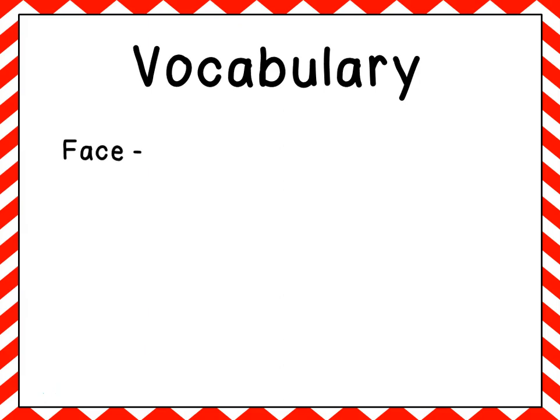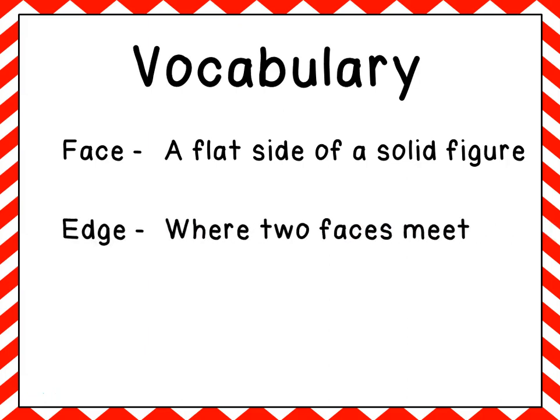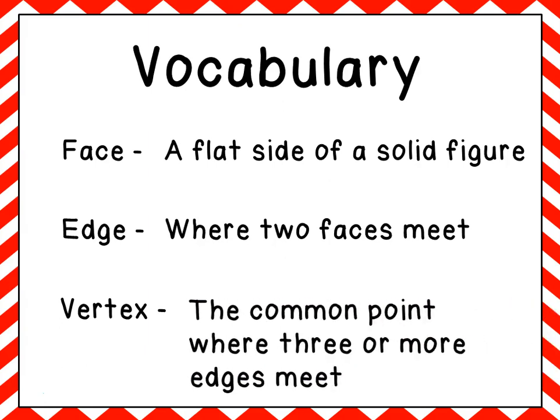The first word we want to look at is the word face. A face is a flat side of a solid figure. The next word is edge. An edge is where two faces meet — they form a straight line. And the third word is vertex, or vertices if you have more than one. A vertex is the common point where three or more edges meet.